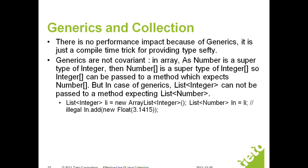GENERICS are not covariant. Taking the example given in the slide: a Number is a super type of Integer, so I can create a reference of Number and assign an object of Integer. The same thing is valid with arrays — a Number array is a super type of Integer array, so I can create a reference of type Number array and pass the object of an Integer array to it.